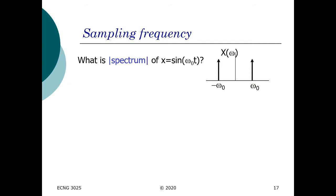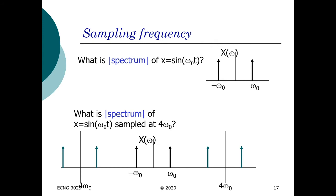Now let's take the spectrum of that same signal but instead sample at 4ω₀. This means the signal is going to be repeated at every instance of 4ω₀. However, the spectrum of the signal does not grow — it actually remains the same, because the spectrum is replicated due to this increased sampling frequency, but we only care about the original signal. So whether it is one replication or the original signal, we only care about the bandwidth or spectrum of that signal. In this case, it will always be 2ω₀.